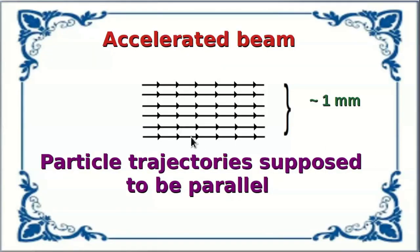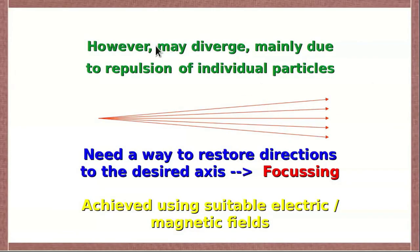The accelerated beam of particles consists of ions traveling in parallel trajectories with a beam cross section of diameter around one millimeter. However, the trajectories may slightly diverge, mainly due to repulsion between individual particles which are all of the same charge sign — inter-particle repulsion. So we need a way to restore the directions of the particles to the desired axis, which is essentially focusing the beam. This is achieved using suitable electric or magnetic fields.